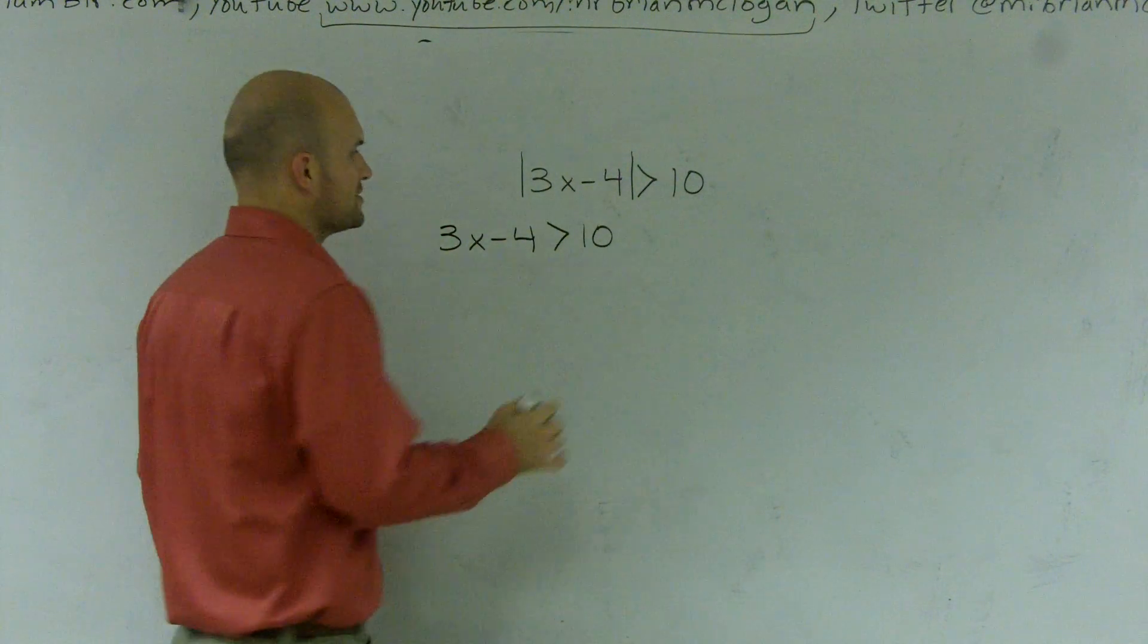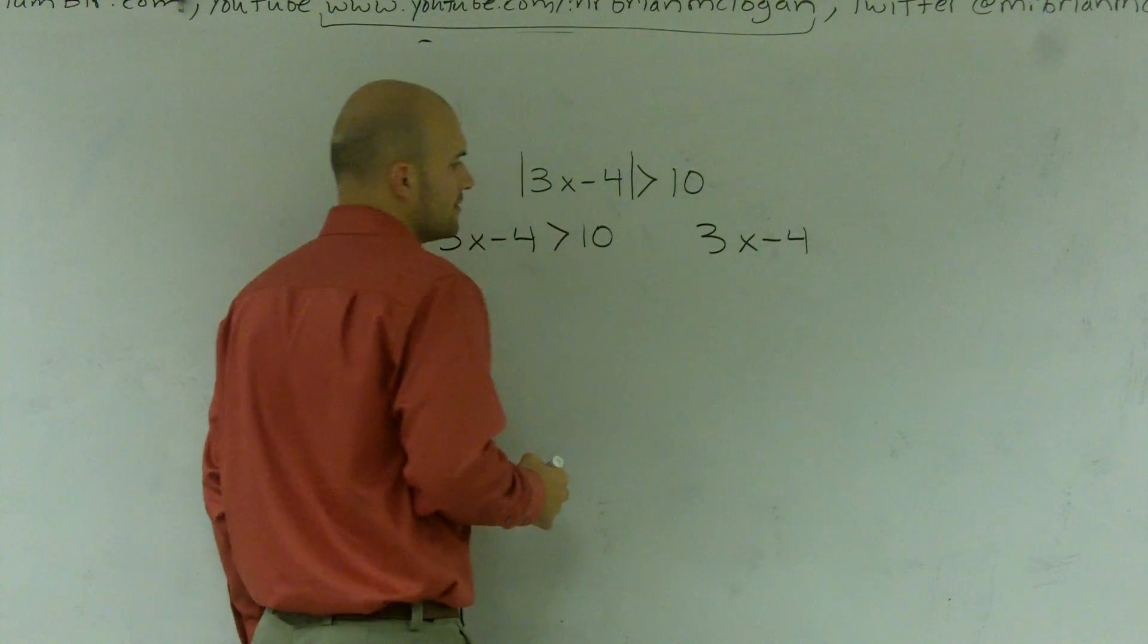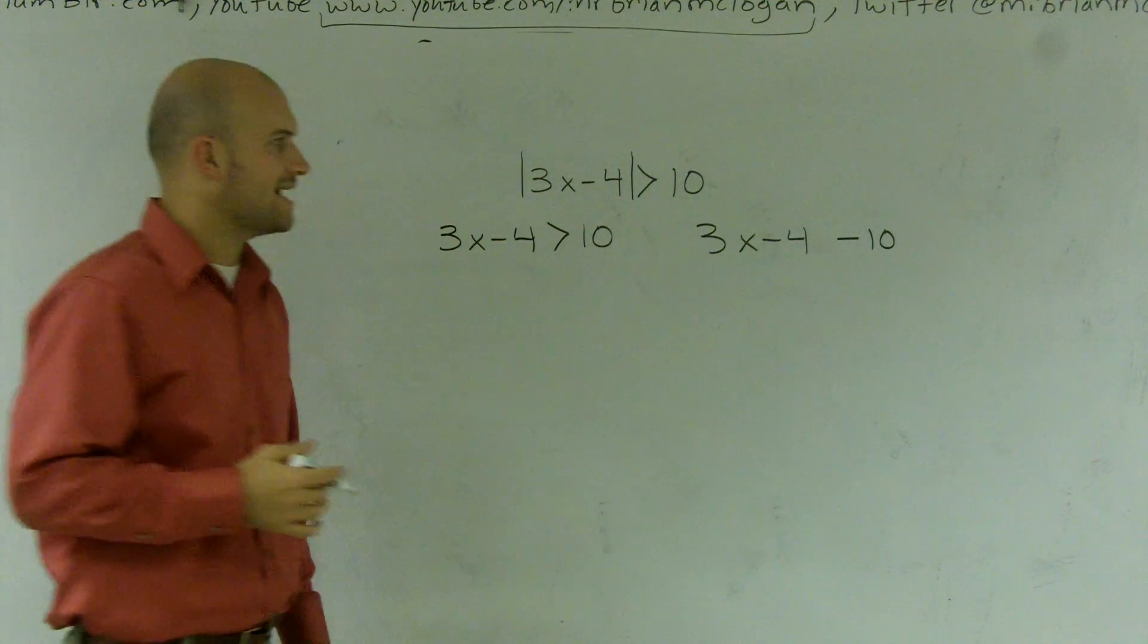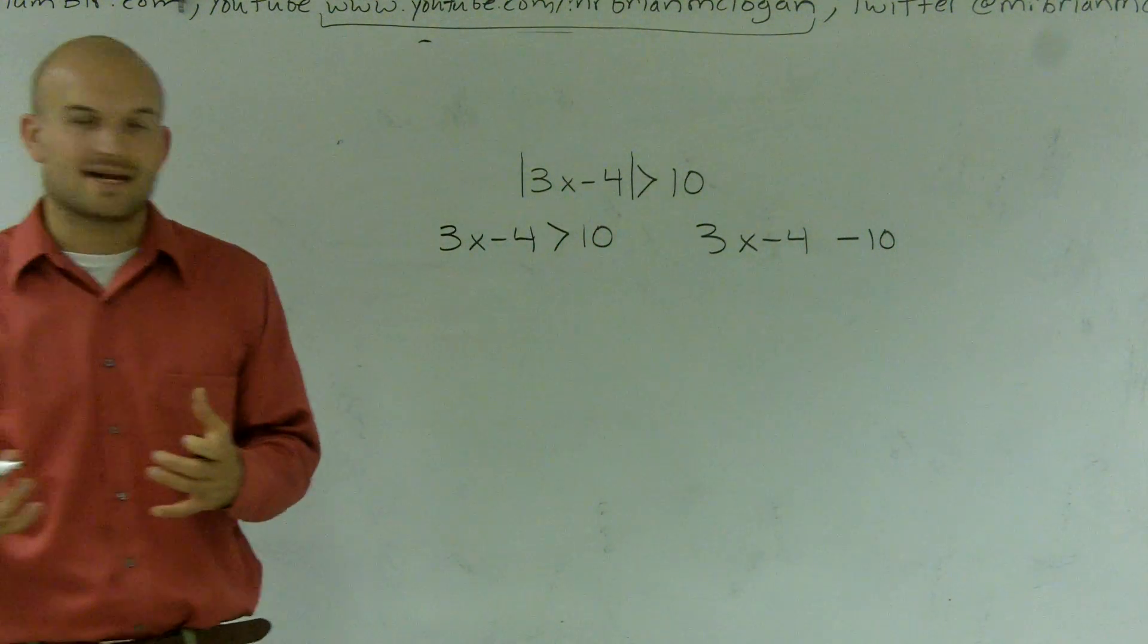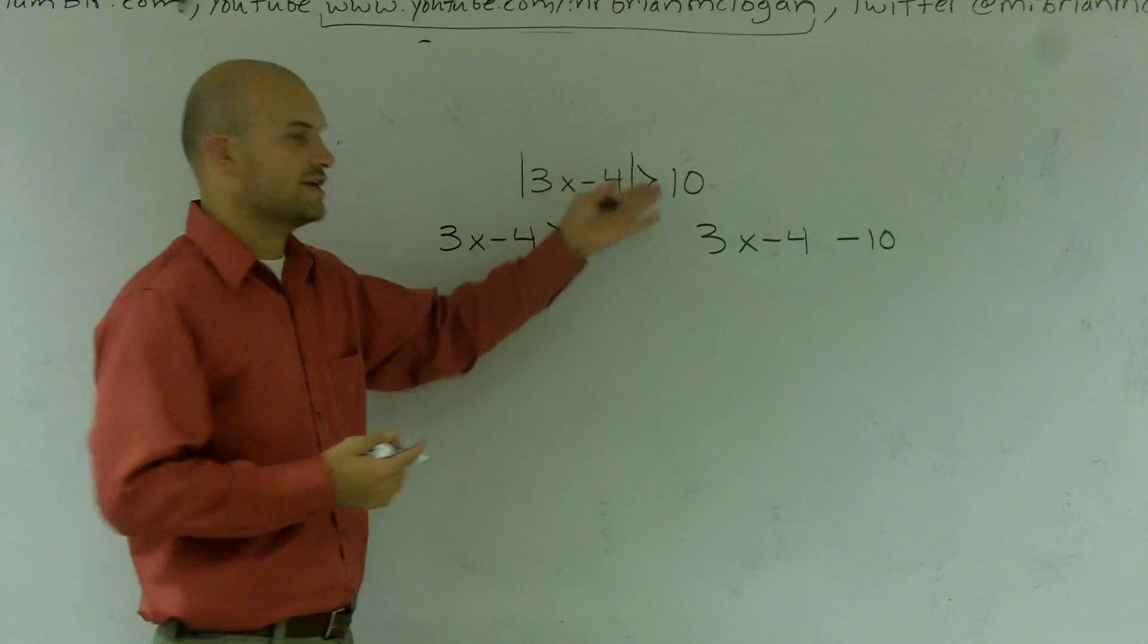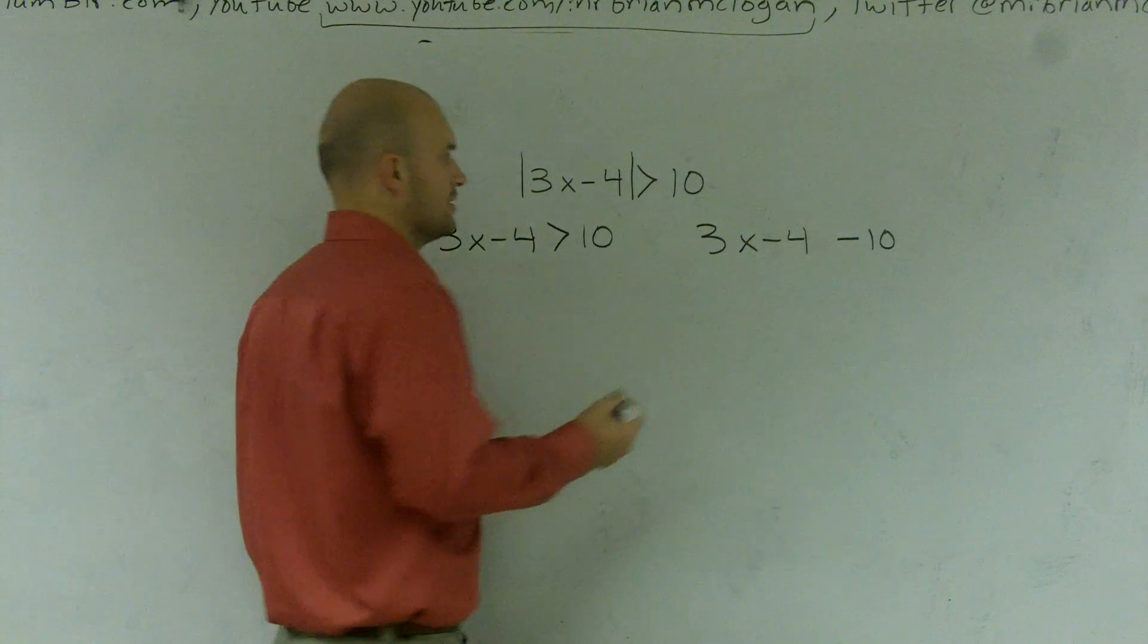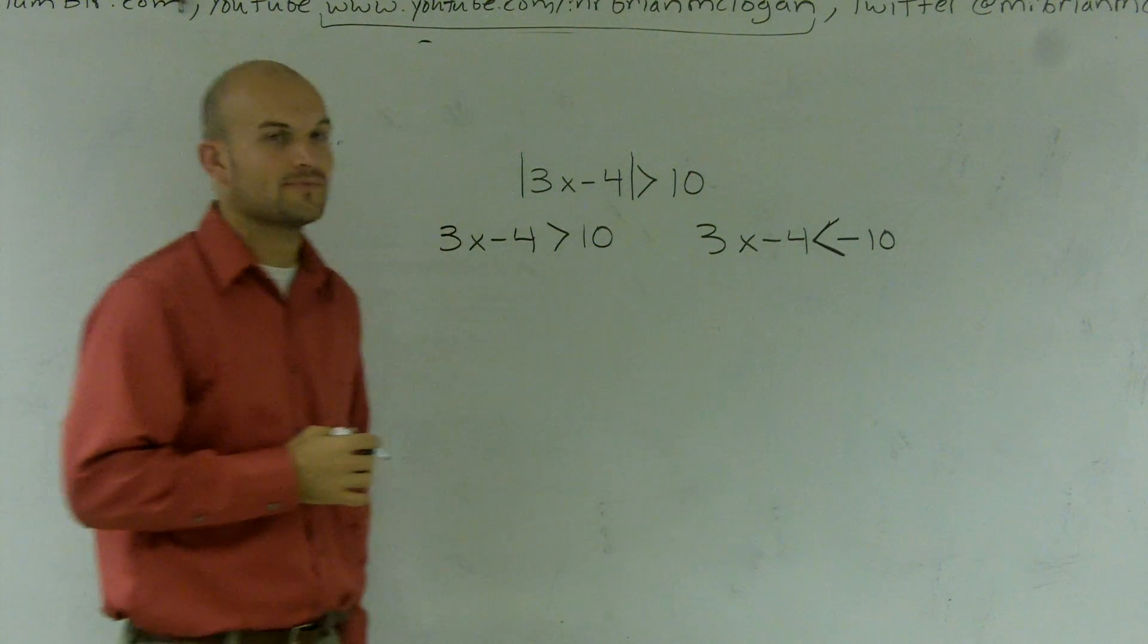And then remember, if I was going to do this as 3x minus 4, well, if I was going to make this a negative 10, what that's kind of symbolizing is I'm changing that sign. When I change the sign, remember on inequalities, where you divide or multiply by negative 1 on both sides, you have to change the sign. Well, that's exactly the same thing true for absolute value inequalities. So if I'm going to change this, I need to also change the sign.